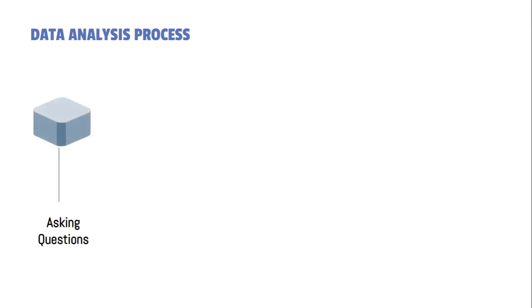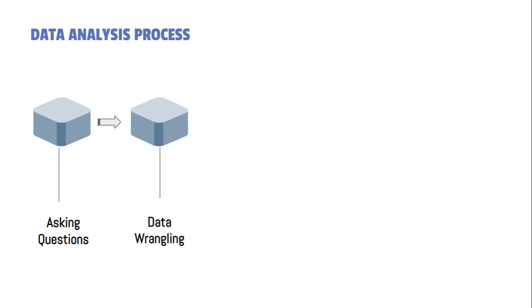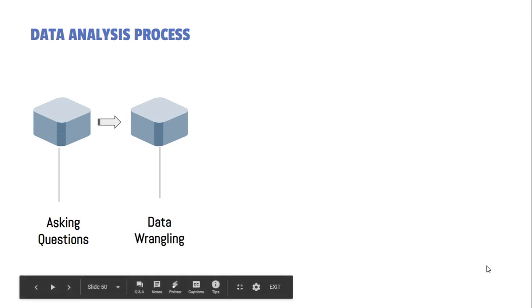In total there are five parts. The first part is asking the right questions. Whenever you get data, you will have to start with this particular step where you ask questions about that data. The second step is data wrangling.